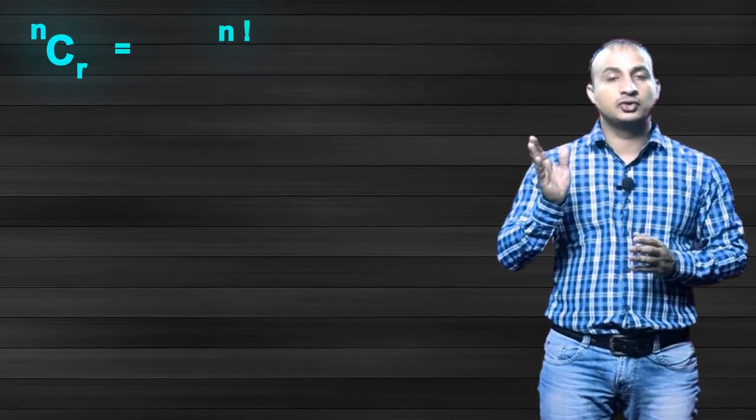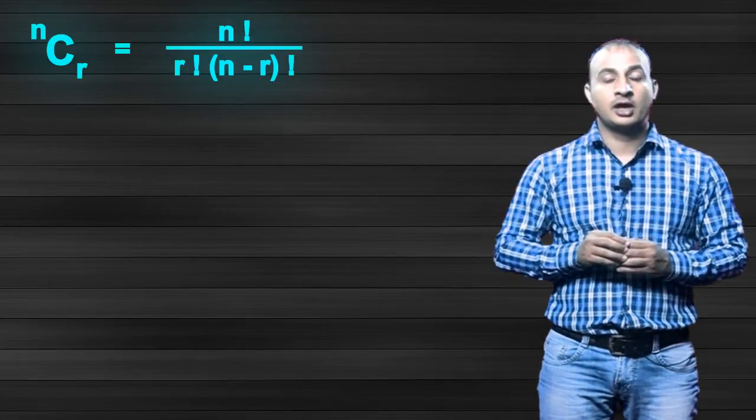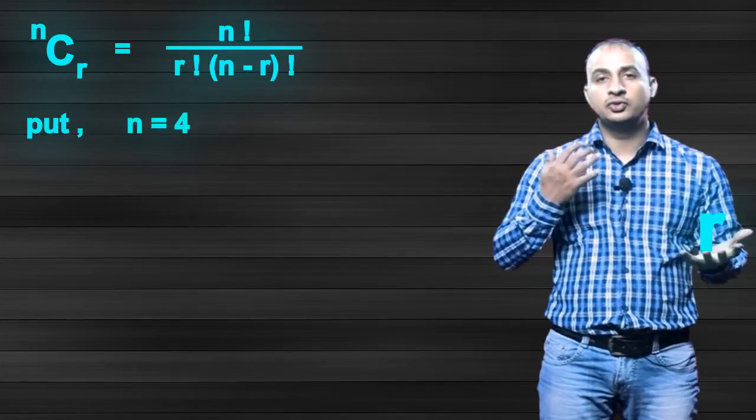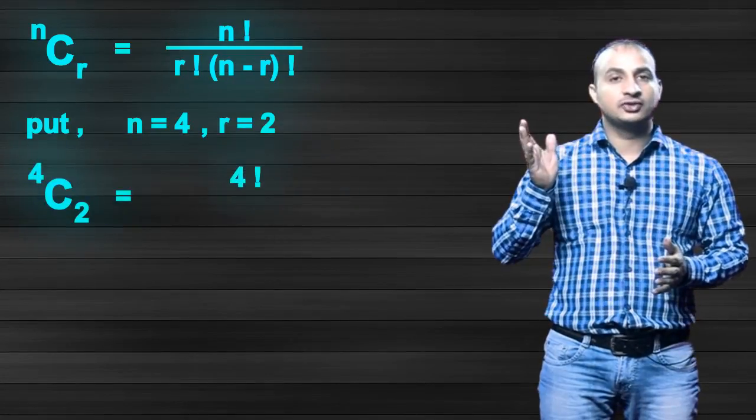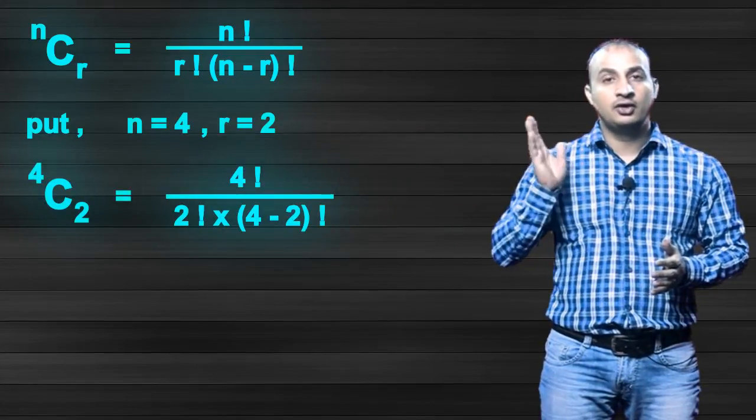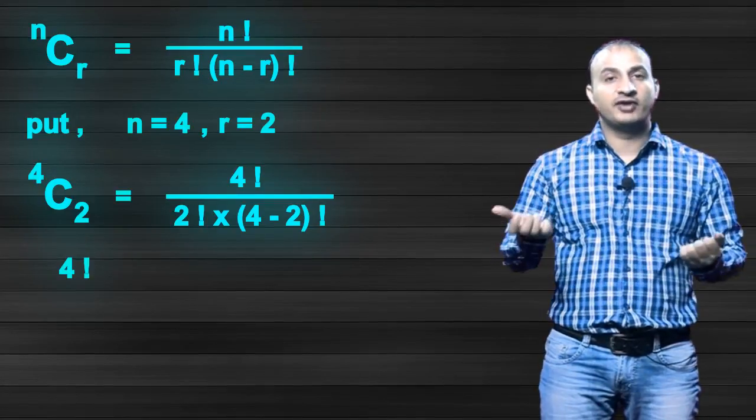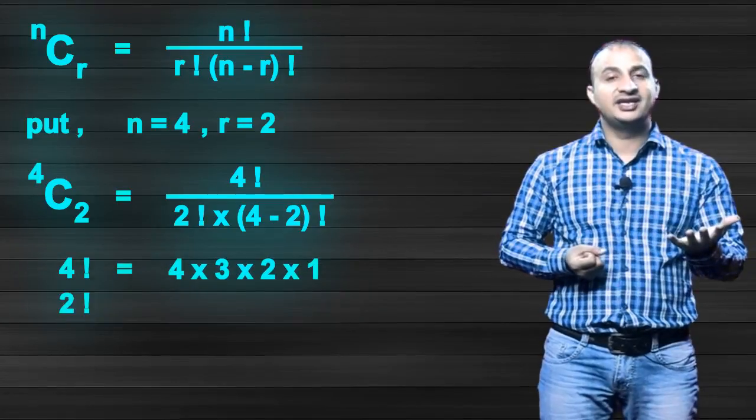Now here put n is equal to 4 and r is equal to 2. So you put it, now solve it: 4 factorial upon 2 factorial times 4 minus 2 factorial. Now here 4 factorial is 4 into 3 into 2 into 1, and 2 factorial is 2 into 1. Put these values here.